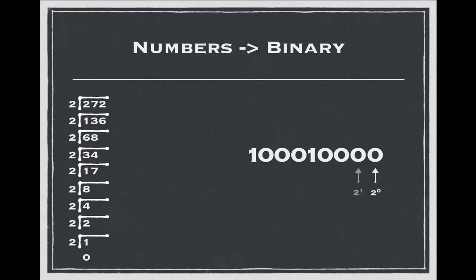The next spot is 2 to the 1, which holds the numeric value 2, because 2 to the 1 is 2. And this process repeats all the way down the chain: 2 to the 2, 2 to the 3, 2 to the 4, and so on.